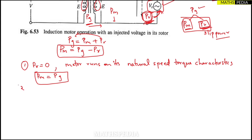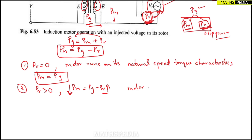Case 2: When PR is greater than zero. Since PM = PG − PR, as PR increases, PM will reduce. Therefore the motor will run at a speed lower than synchronous speed.